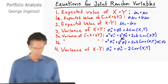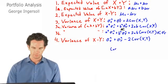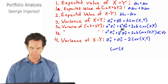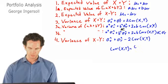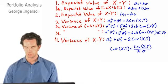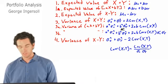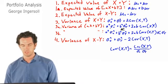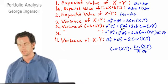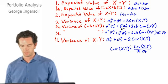Why can we do that? Because correlation of X and Y equals the covariance of X and Y divided by the standard deviation of X times the standard deviation of Y. If we cross-multiply, correlation of X and Y times the standard deviation of X times the standard deviation of Y equals covariance. So equations 3a and 3b are interchangeable — we're just substituting covariance with correlation times the two standard deviations.